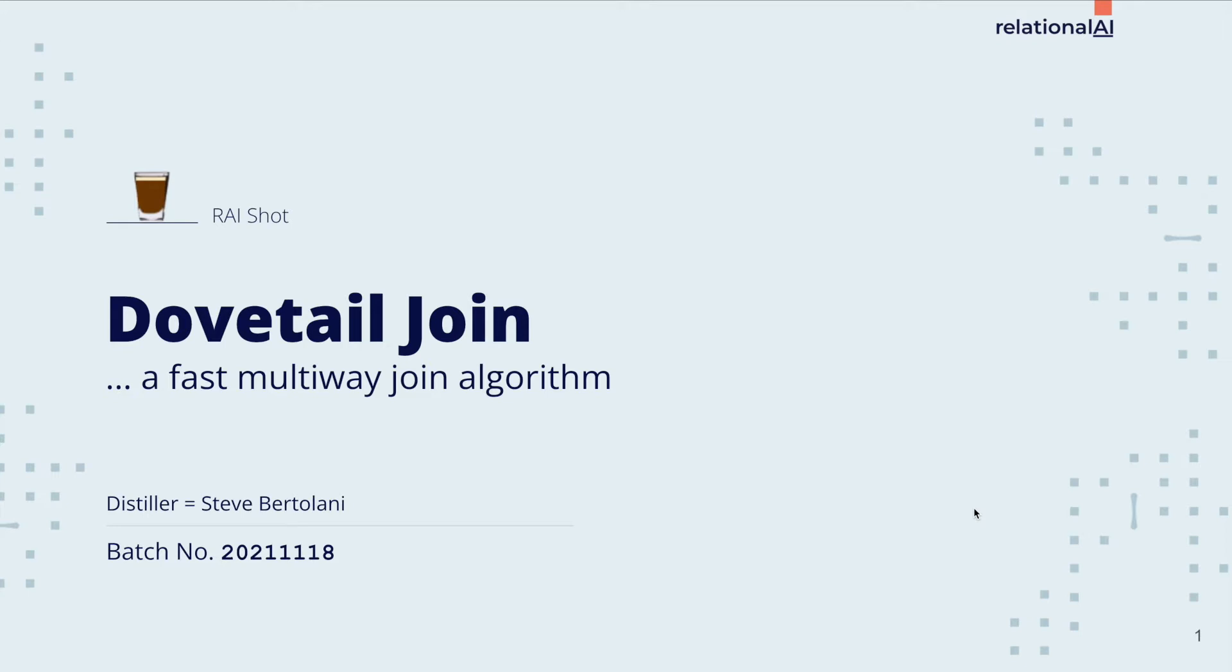One crucial part of our system is our dovetail join algorithm. This algorithm allows us to do a lot of complicated joins extremely fast.